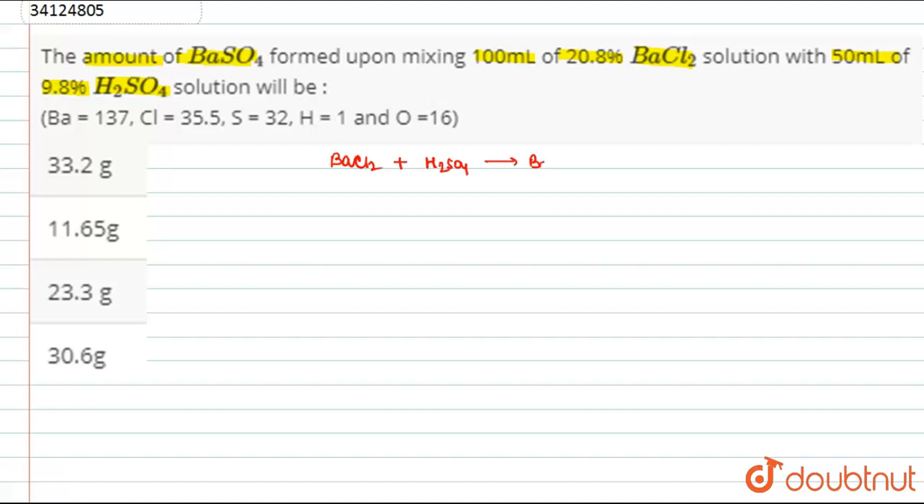Here we will show how BaSO4 will be formed by adding BaCl2 and H2SO4. So, let's calculate the molecular masses. The BaCl2 molecular mass is 208 grams. H2SO4 is 98 grams. And BaSO4 is 233 grams. These are the weights of one mole of these compounds.